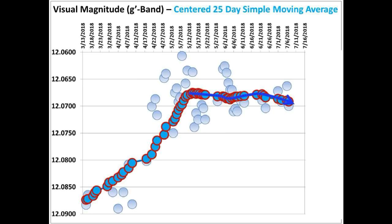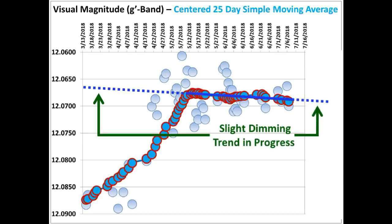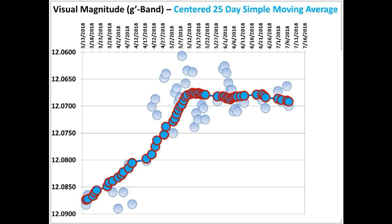This is the best-fit curve for the topping-off phase after the brightening happened. Notice that if you replace this with a best-fit linear curve, you get a line which shows a shallow trending dimming slope that may have started.